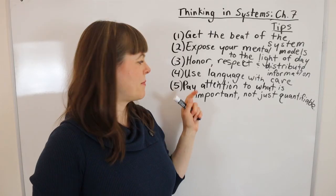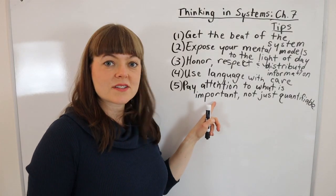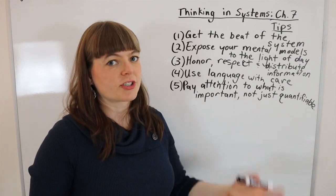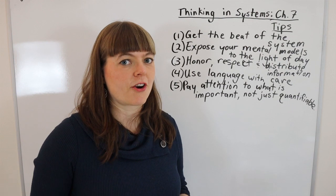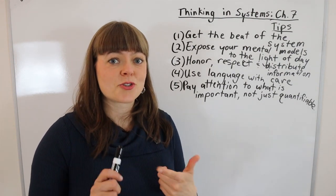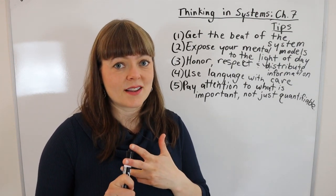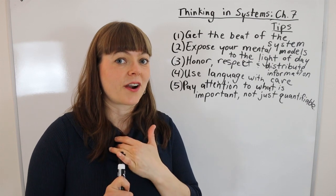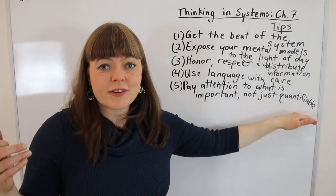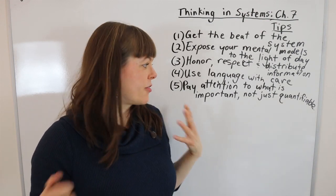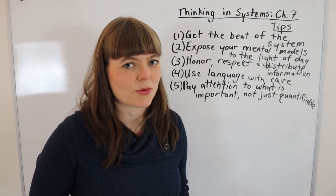Her next tip is to pay attention to what is important, not just what is measurable. Because the most important things out there are probably not very measurable. Justice, truth, democracy, love, security, freedom. None of those is really perfectly quantifiable and yet those are the things that we want built into our systems.